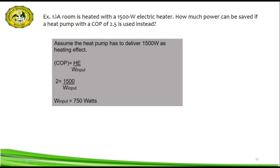We assume the heat pump has to deliver 1500 watts as a heating effect. The given equation is: COP equals the heating effect over the work input. Putting all the values into the equation, we have 2.5 as our COP equals 1500 watts over our work input, which is what we are solving for. Using a calculator, we get the work input as 750 watts.